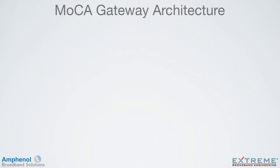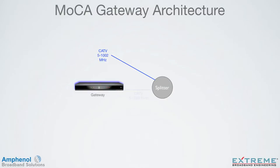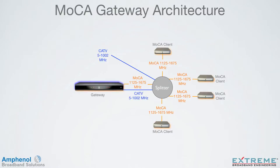The MOCA Gateway architecture is becoming very popular with MOCA home networking. This is where a MOCA Gateway device is used as the main DVR for recording and shares its contents with MOCA clients. The gateway needs to receive CATV signals to record content, and then shares its content to MOCA clients via the MOCA frequencies. With this architecture, we can use it to our advantage to provide better MOCA performance and help eliminate ingress into the return path.